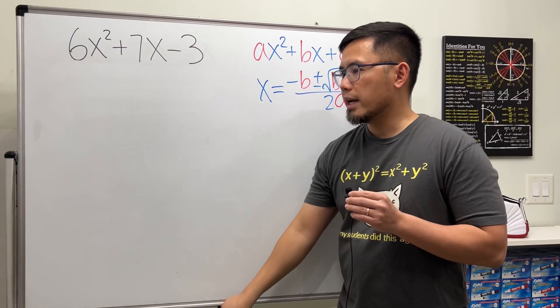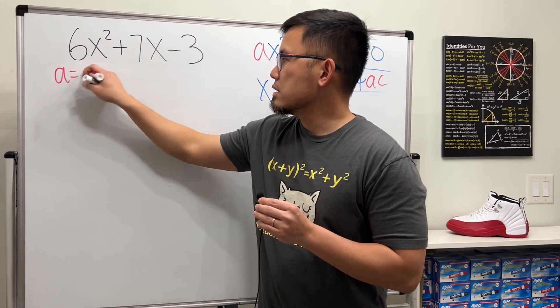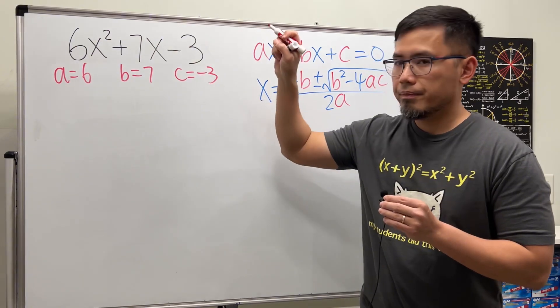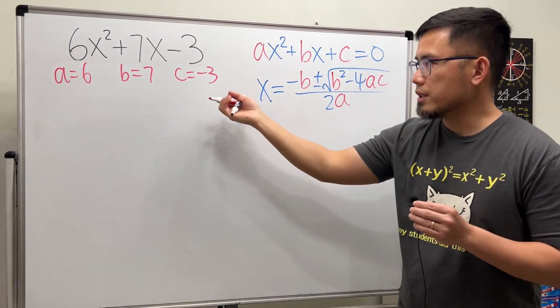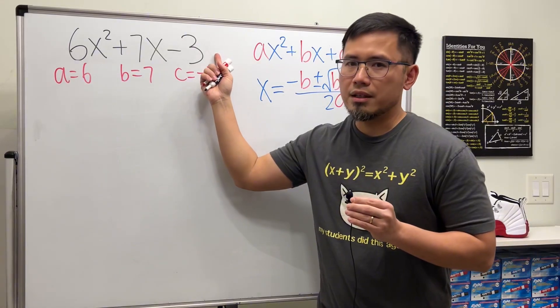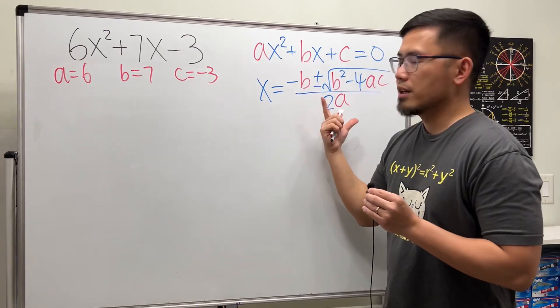Now let's just go ahead and work out the formula with this. a is 6, b is 7, c is negative 3. Now let's go ahead and draw this number into here. And again, because this right here is not an equation, I'm not going to write down x equals. I'm just going to write down this expression.